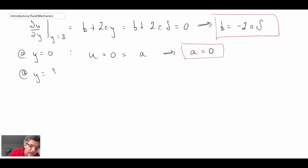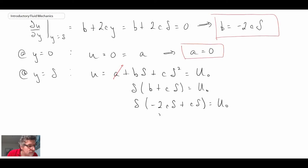At y equals delta, this is where the velocity was equal to the freestream velocity. Now a, we can get rid of because we know that's 0. We can plug in the value of b. And from this, we can then determine c. So that is c determined.